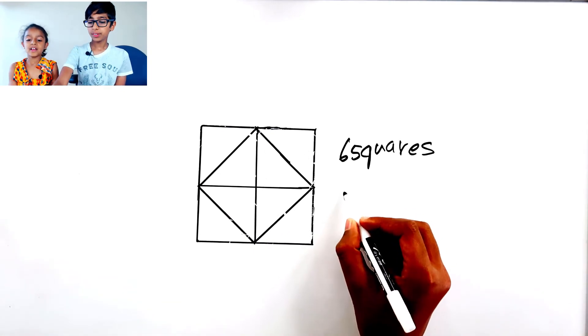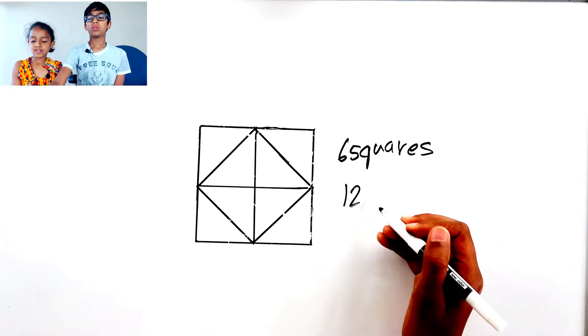So, how much? Twelve! So, we found twelve. Twelve triangles.